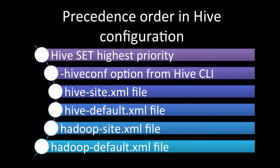In Hive, the precedence order for any configuration is as follows. First, we have 'hive set' — whatever we set from the Hive shell has the highest priority. Next is the '-hiveconf' option from the Hive command line interface, which is the second highest in priority.